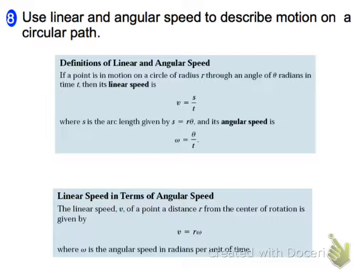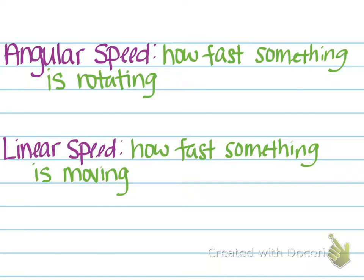So the next objective is talking about linear and angular speed. Now I have some formal definitions listed here from your book. But let's go ahead actually and let's take a look at just what those words mean first before we talk about the actual formulas. The first thing I want to talk about is angular speed. Now angular speed is how fast something is rotating. So for example angular speed is going to be determined by revolutions, and it will often say revolutions per minute or per second or per hour. So it's talking about how fast it's going around a circle, how fast it's rotating.